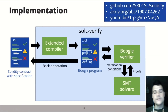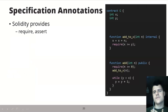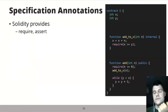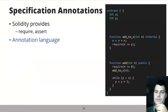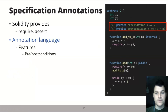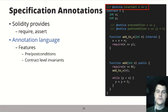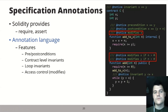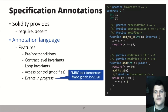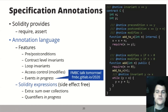Let me give a glimpse of the annotations. Solidity provides require and assert statements which we support, and we also developed an annotation language based on modular verification. These annotations are provided as special comments in the code. We support pre- and post-conditions, contract-level invariants that must hold before and after every public function, loop invariants, fine-grained access control specifying which variables can be modified under which condition, and we are also working on specifying events — there will be a talk on this tomorrow at the FMBC workshop at CAV.